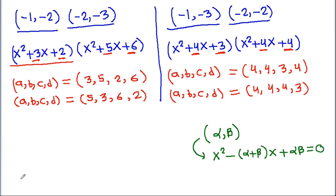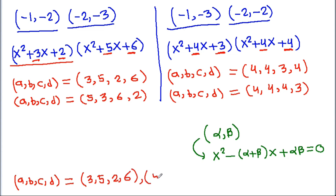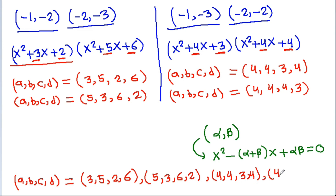So we get (a, b, c, d) equal to (3, 5, 2, 6), or (5, 3, 6, 2), or (4, 4, 3, 4), or (4, 4, 4, 3). These are the four values of a, b, c, d.